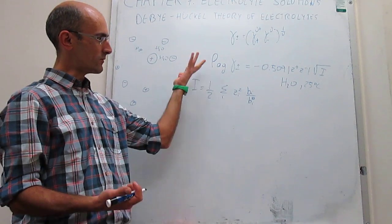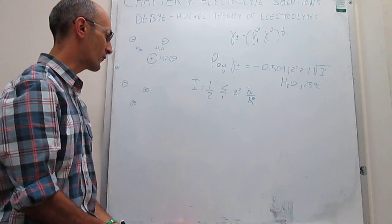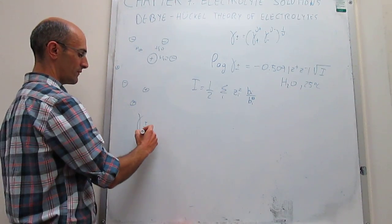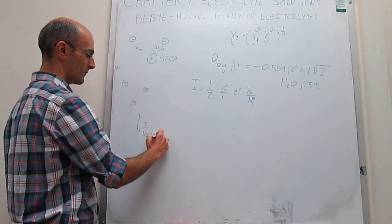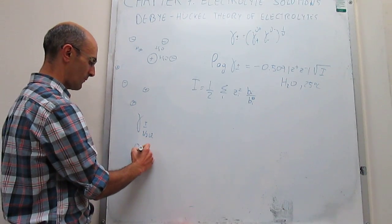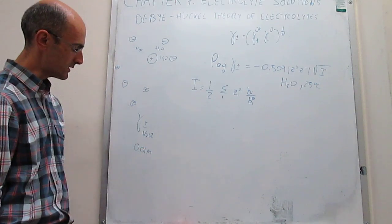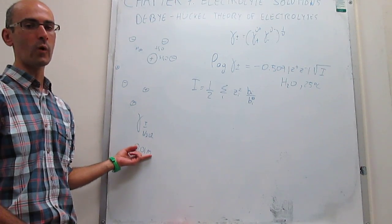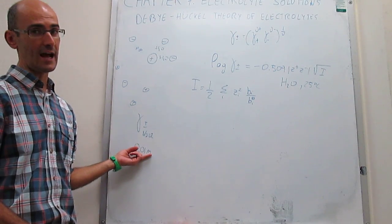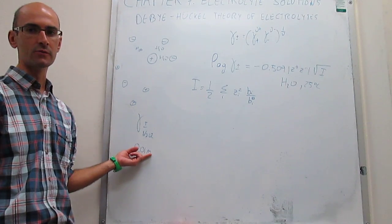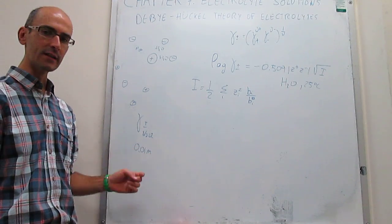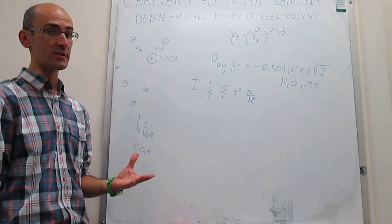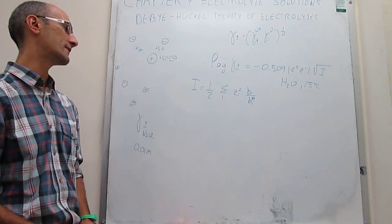We're going to illustrate how this works by calculating the mean ionic activity coefficient for sodium chloride in a solution that is quite dilute: 0.01 molal solution of sodium chloride. This is extremely dilute. In this solution, there are about 5,000 water molecules for each positive or negative ion that you have in solution. Even though this is very dilute, you're still going to see how the activity coefficient is not 1, which is what would happen if you expect to find ideality.